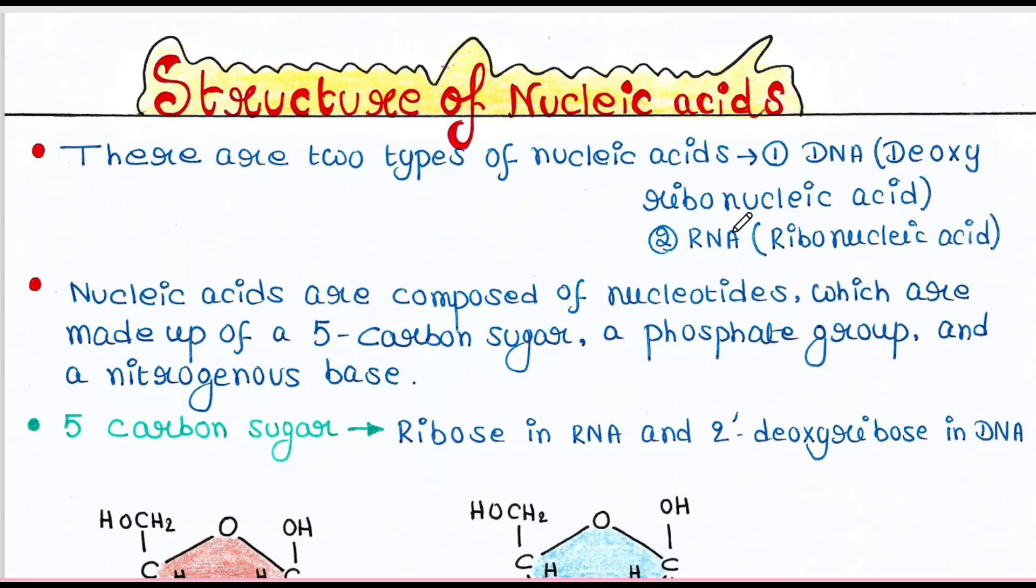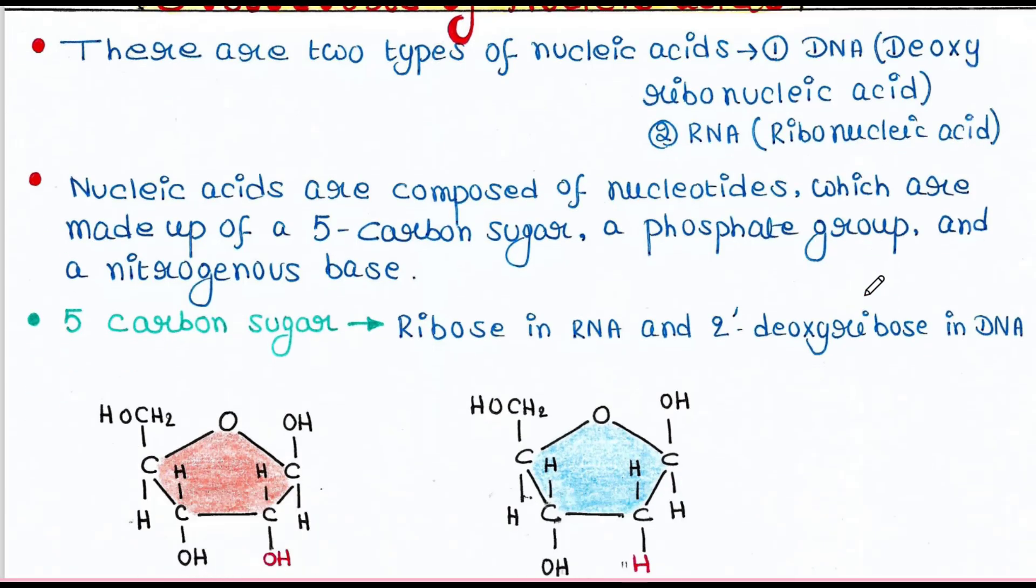These two nucleic acids are composed of nucleotides. Nucleotides are basically made up of a sugar, a phosphate group, and a nitrogenous base. The sugar is a 5-carbon sugar, that means it has 5 carbons.